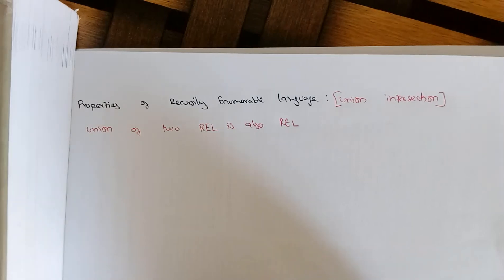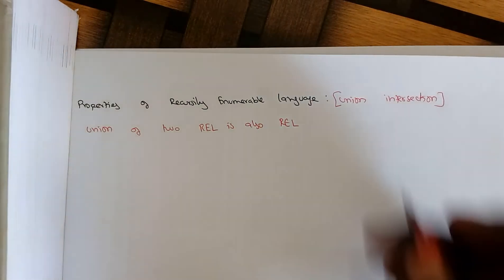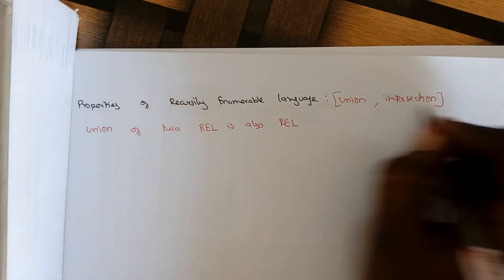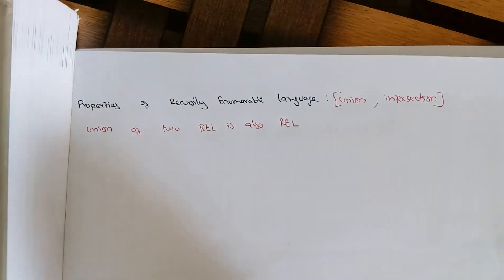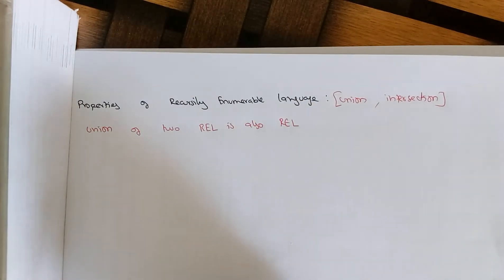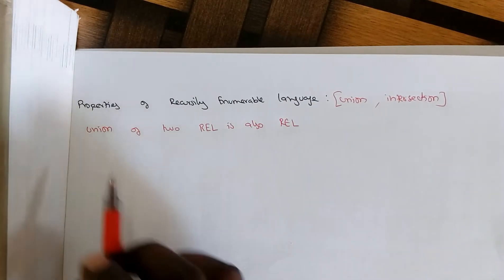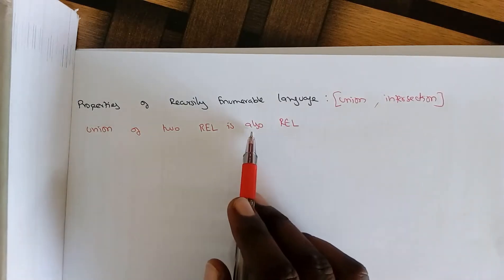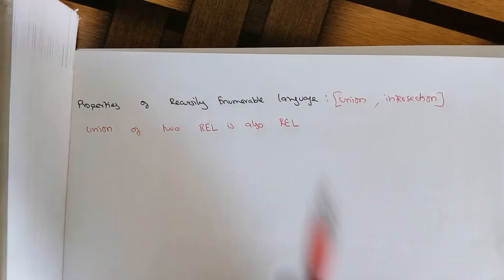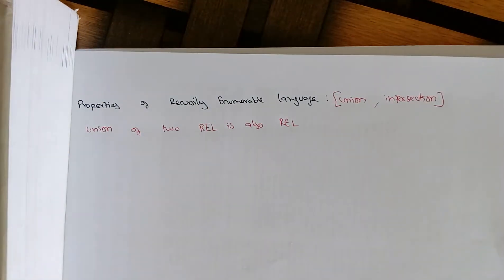Consider the properties of a recursively enumerable language. Here I considered two properties: union and intersection. A recursively enumerable language is closed under both union and intersection. That is, the union of two recursively enumerable languages is again a recursively enumerable language.